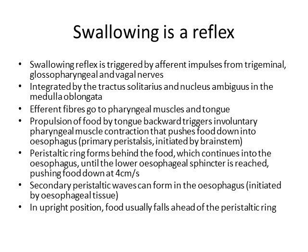So we have signals going from the mouth, from the tongue, to the brainstem, to the medulla oblongata. From there, efferent fibers then go to your pharyngeal muscles and your tongue, which triggers off these involuntary pharyngeal muscle contractions.